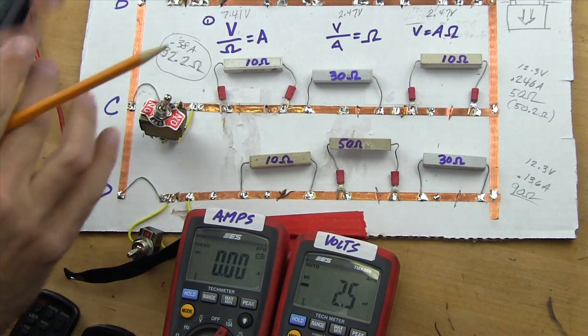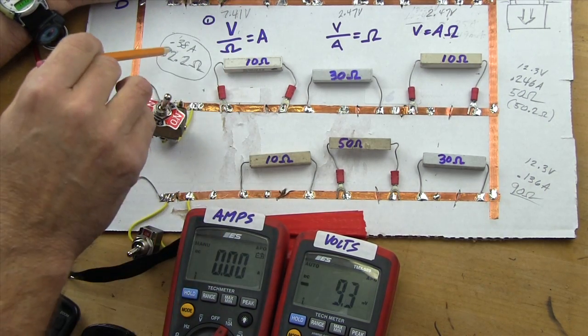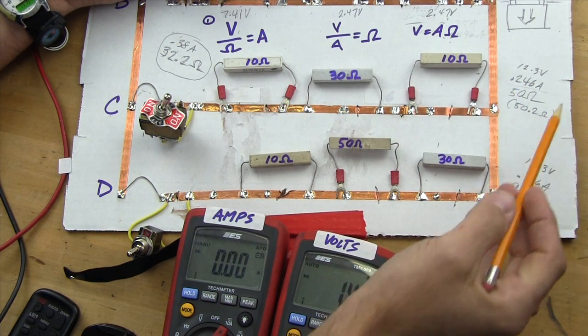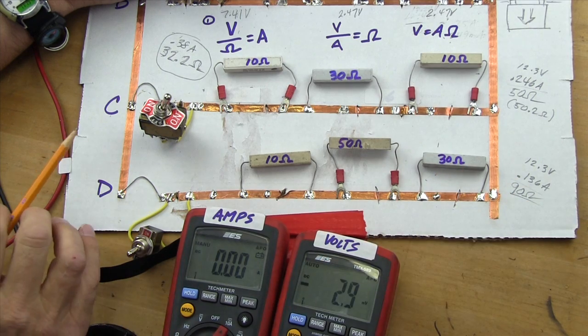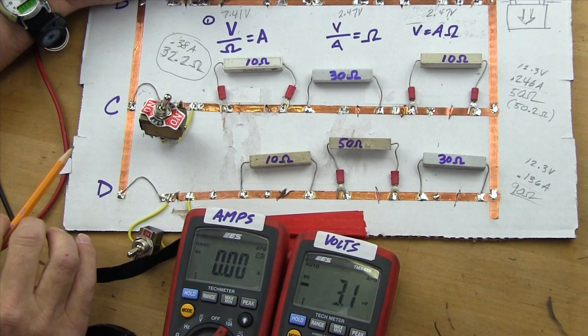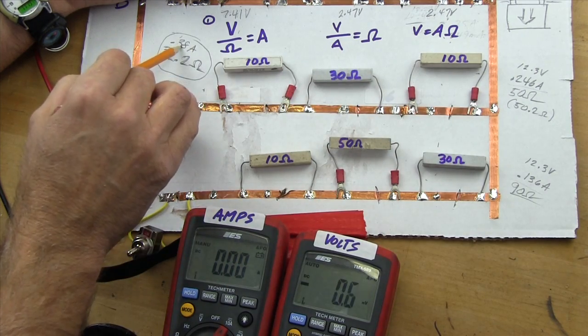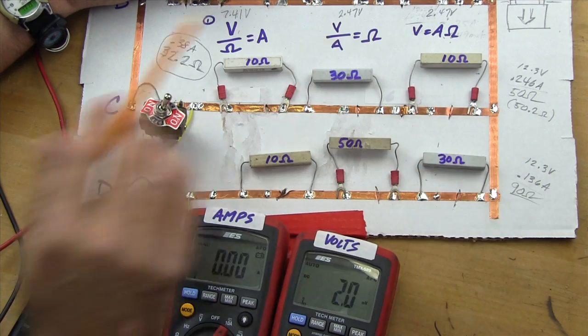So what does that mean? That means that the total system is going to draw 0.38 amps. This circuit is going to draw 0.246 amps, or a quarter. This circuit is going to draw 0.13, which is just over an eighth. That's the amperage of the system. Total amperage, 0.38. This circuit and this circuit add up 0.246 and 0.136.